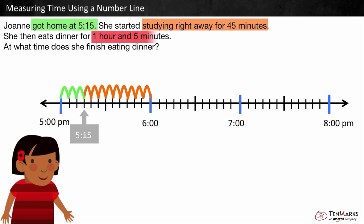Joanne then eats dinner for 1 hour and 5 minutes. 1 hour is the same as 60 minutes. We can count by 5's from 6 o'clock to get to 60 minutes. Or, we can add an hour to 6 o'clock. 1 hour from 6 o'clock is 7 o'clock. If we add 5 minutes, it becomes 7:05. Joanne finished eating dinner at 7:05.